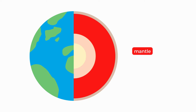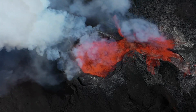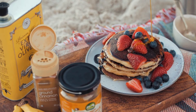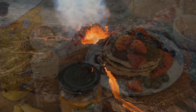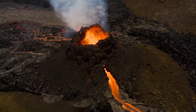Next up, we have the mantle. This is the thickest of all the layers, with a measurement of approximately 2,900 kilometres. The mantle contains magma, which is viscous, kind of like a thick syrup. It is not entirely solid or liquid, so we can refer to it as semi-solid or semi-liquid.